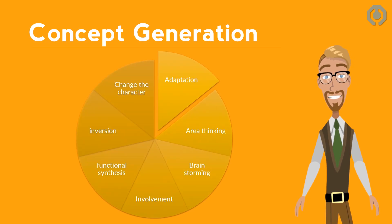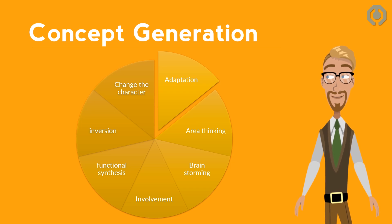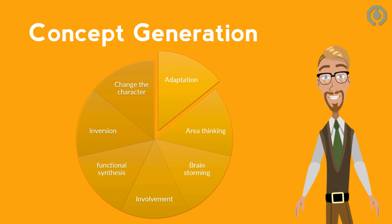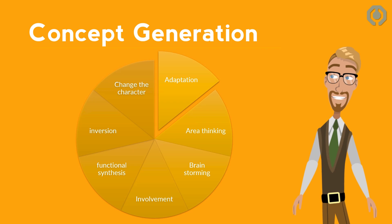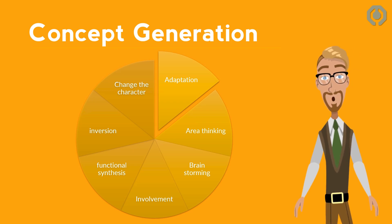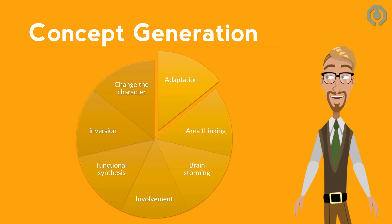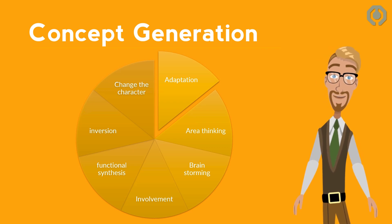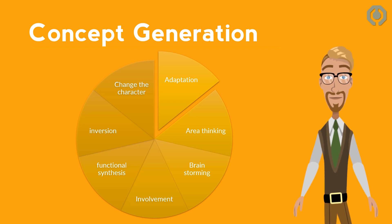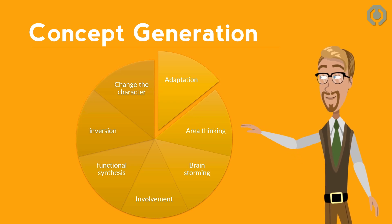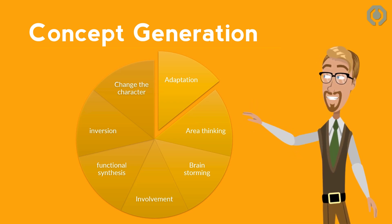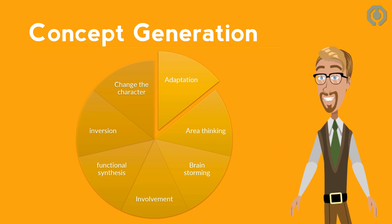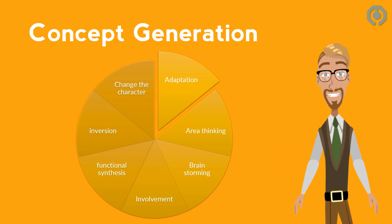The fourth step of design process is concept generation. This is the most creative part of the design process. In this step, based on the design specifications and gathered information, we generate some concept designs. There are several considerations for this step which vary based on the design field. For example, a mechanical engineer designer should always be aware about symmetry in concept generation. Some general approaches to concept generation are adaptation, area thinking, brainstorming, involvement, inversion, and so on. They are effective methods to increase creativity in a structural way.